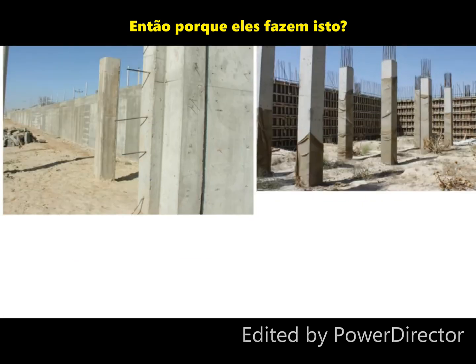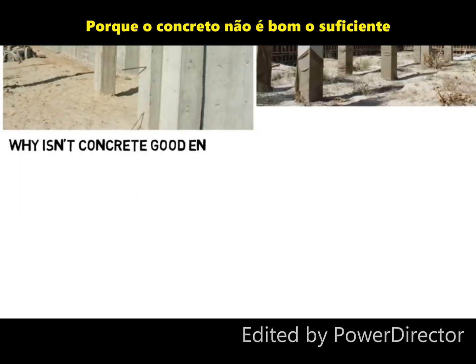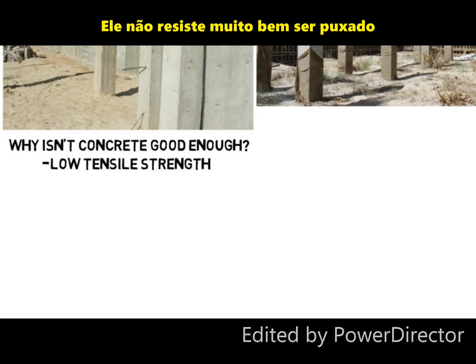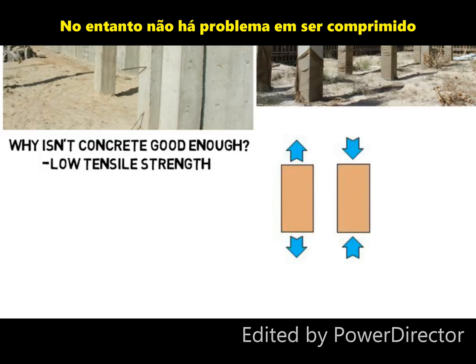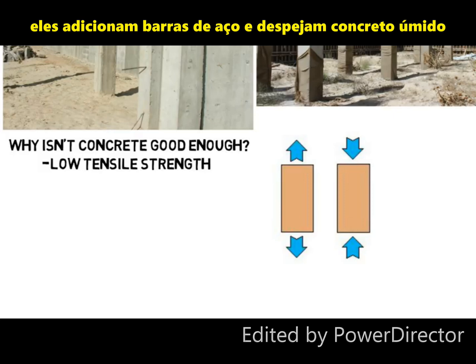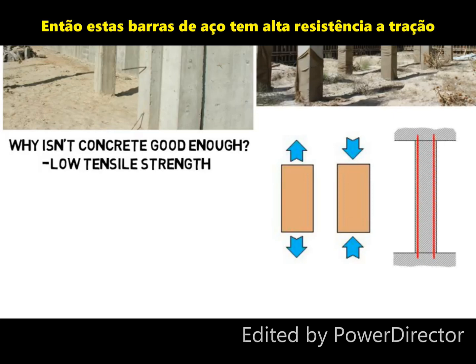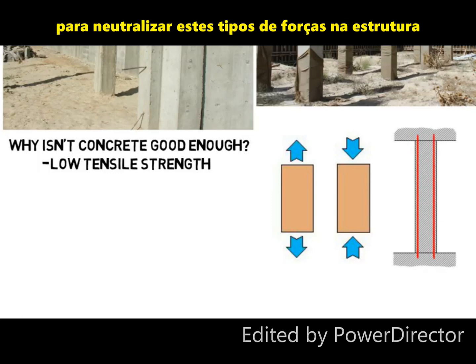So why do they do this? Why isn't concrete good enough? Well concrete alone, once hardened, has low tensile strength — as in, it does not handle being pulled very well. However, it's okay with being compressed. But to counteract that low tensile strength, they add steel beams and pour wet concrete which hardens around them, and then those steel beams have high tensile strength to counteract those types of forces on the structure.